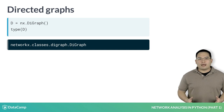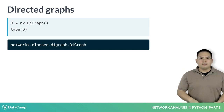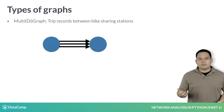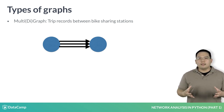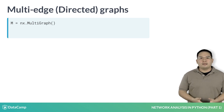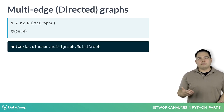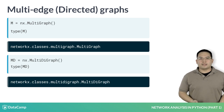We can also have graphs in which there are multiple edges permitted between the nodes. For example, we may want to model trips between bike-sharing stations. Each trip may be one edge between the pair of stations. If we explore this in the IPython terminal, we can likewise instantiate a multigraph using nx.multigraph. If we check for its type, it will be of the multigraph class, and likewise for the multidigraph object.